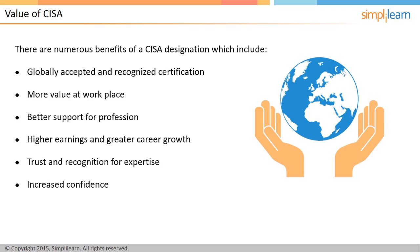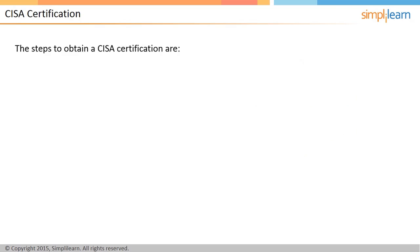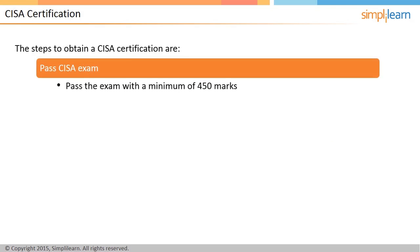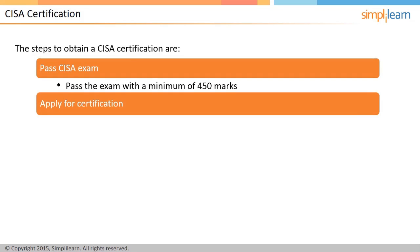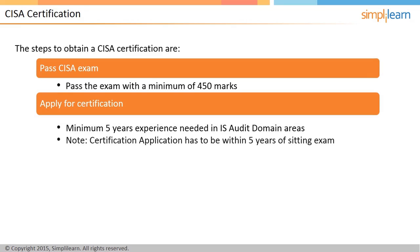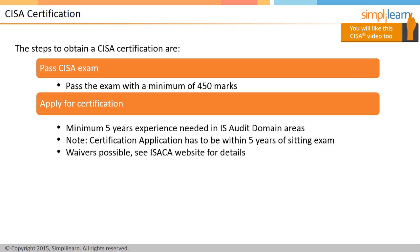To obtain the CESA certification, you need to pass the CESA exam with at least 450 marks out of the total 800 marks, then apply for certification. Before applying, you need to have a minimum of 5 years of experience, even though ISACA grants a number of waivers. The waivers available can be sourced from the ISACA website.